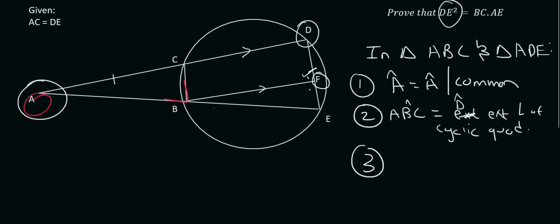The last angle is going to be automatically the same because of the sum of angles in a triangle. So we can say that angle ACB is equal to angle E, and the reason for that is sum of angles in triangle. So there we've got three different reasons.